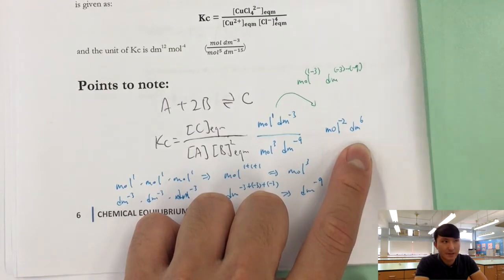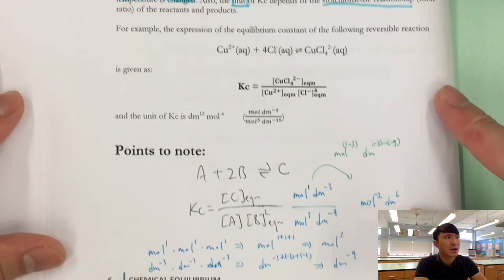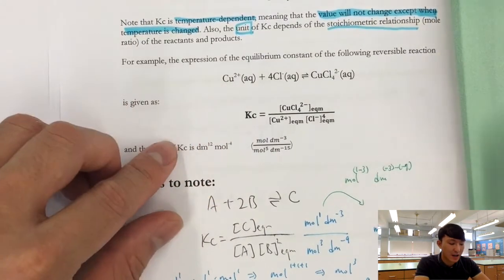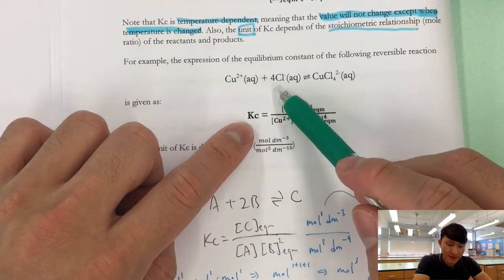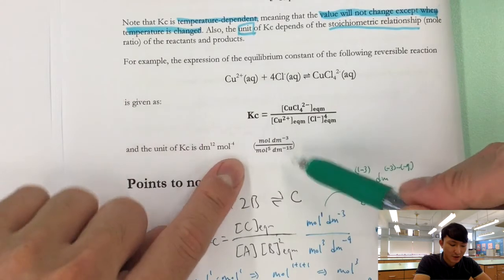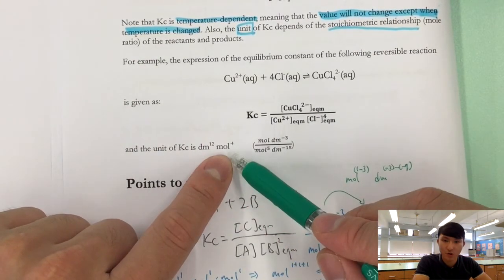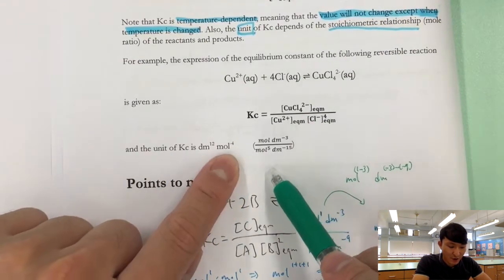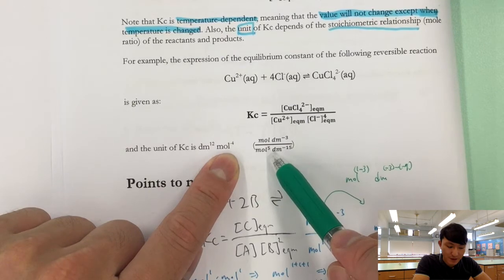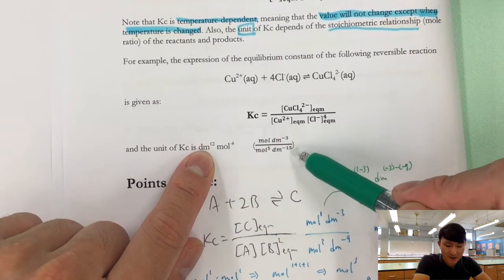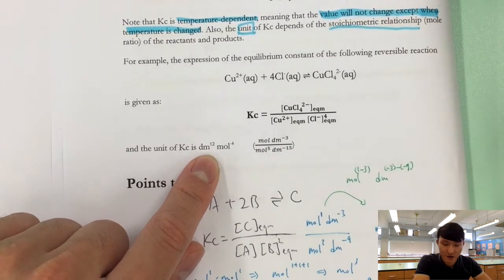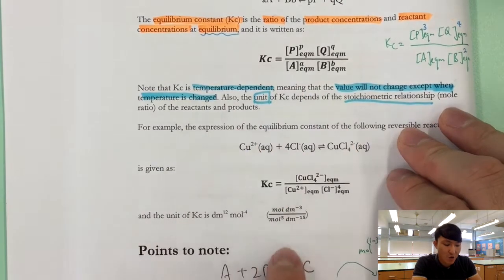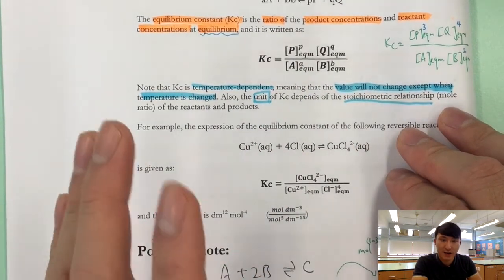Looking at the worked example: Cu²⁺ reacts with 4 moles of Cl⁻ to form a complex ion. Kc is written as product over reactants, and since there are 4 chloride ions, the Cl⁻ term is raised to the power 4. The unit is dm¹² mol⁻⁴, because we have 1 concentration divided by 5 concentrations altogether — giving 1 − 5 = −4 for mol and −3 − (−15) = 12 for dm. These questions are frequently asked in public exams.